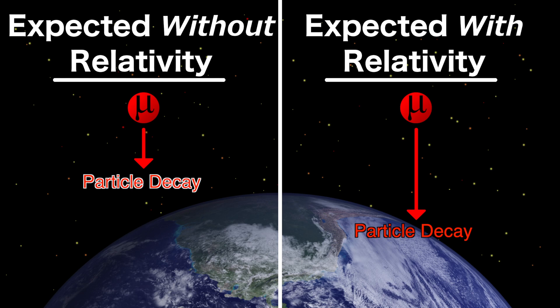Indeed, when measuring fast-moving muon particles entering the atmosphere from space, we detect many more particles than classically expected, but the exact amount predicted by relativity. This indicates that fast-moving particles experience time much slower than when stationary, providing more evidence for time dilation.